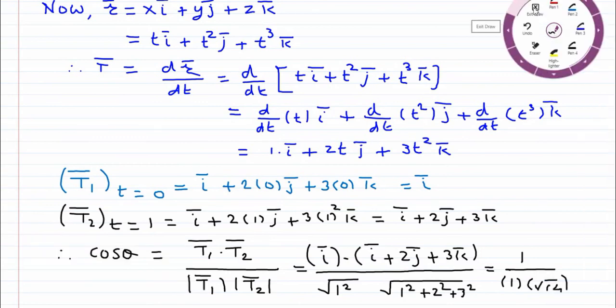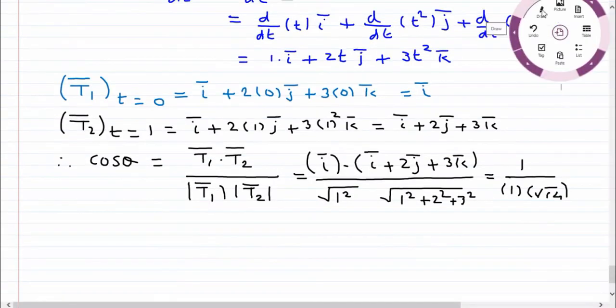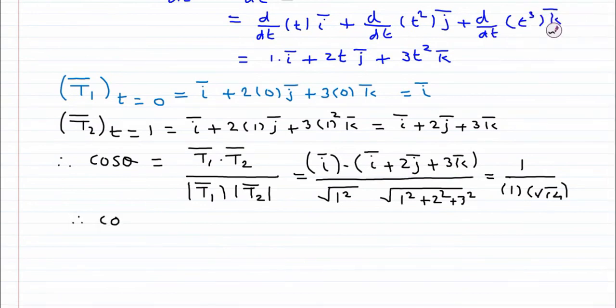So answer is 1 upon root 14. Cos theta equals 1 upon root 14, or we can say that theta equals cos inverse of 1 upon root 14.